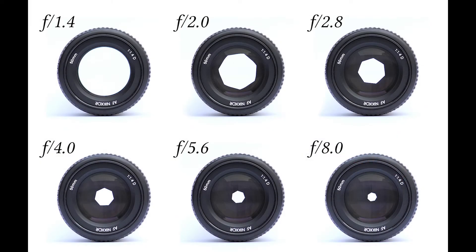Here, we've got an image of several different aperture pupils related to their F numbers. You can see there's an inverse relationship to the size of the number and the size of the hole. The larger the number, the smaller the hole. The smaller the number, the larger the hole.